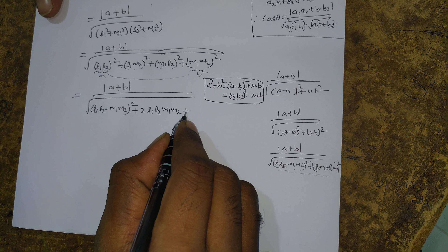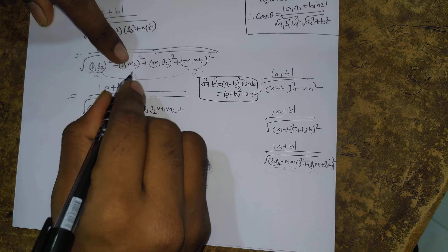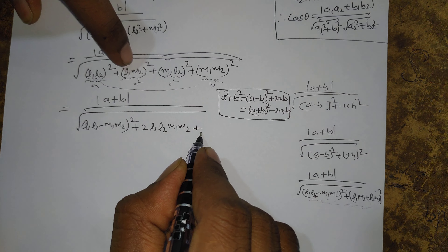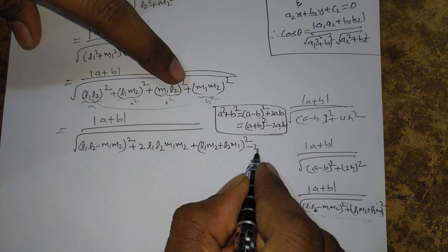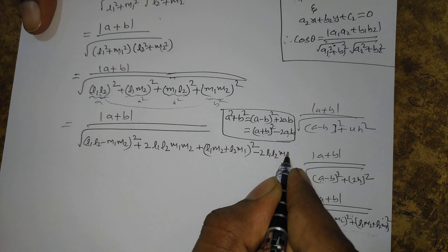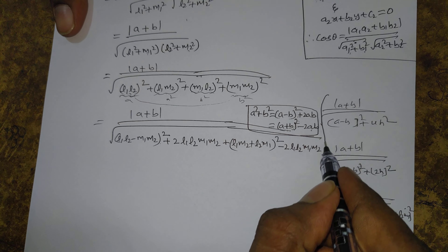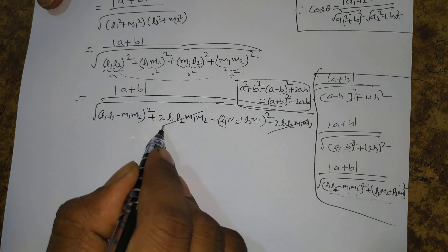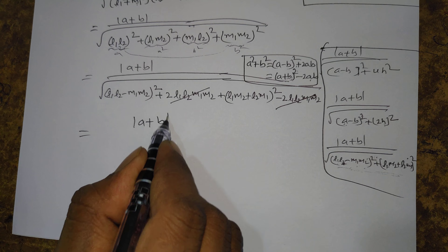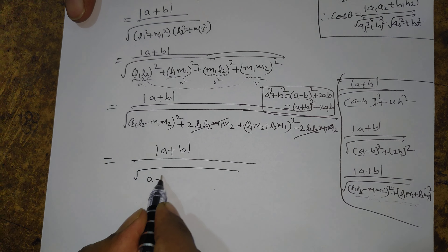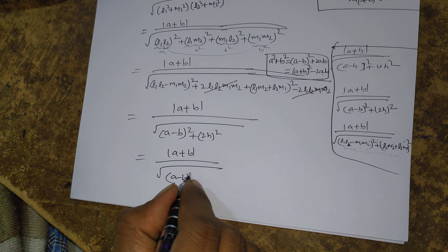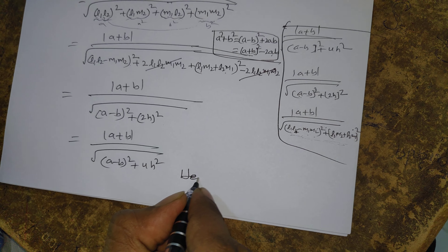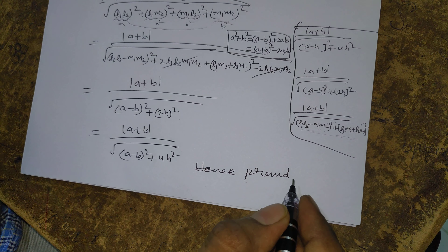Adding these, the -2L1·L2·M1·M2 and +2L1·L2·M1·M2 terms cancel. The remaining expression is (L1·L2 - M1·M2)² + (L1·M2 + L2·M1)² = (a - b)² + (2h)² = (a - b)² + 4h². Therefore, cos θ = |a + b| / √((a - b)² + 4h²). Hence proved.